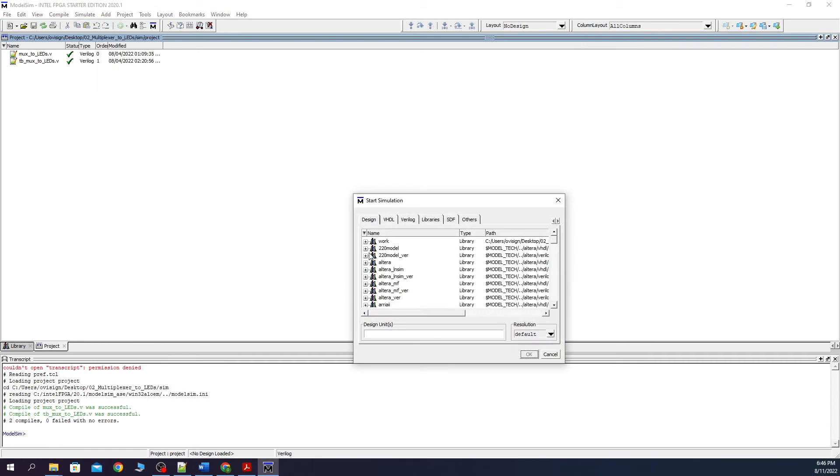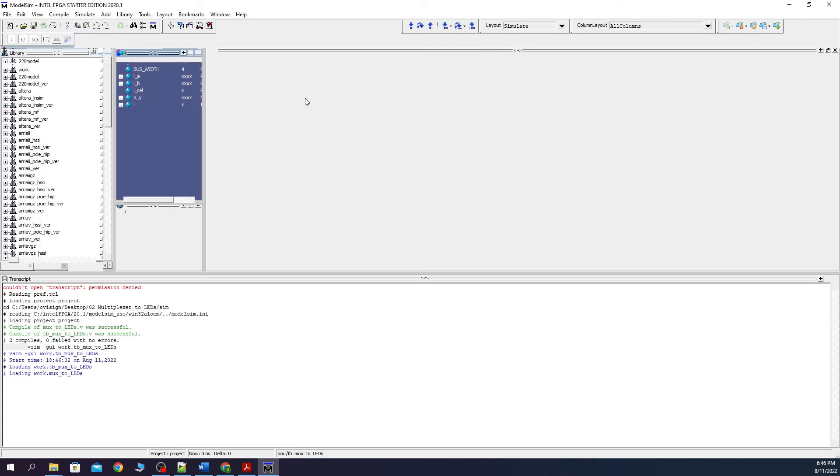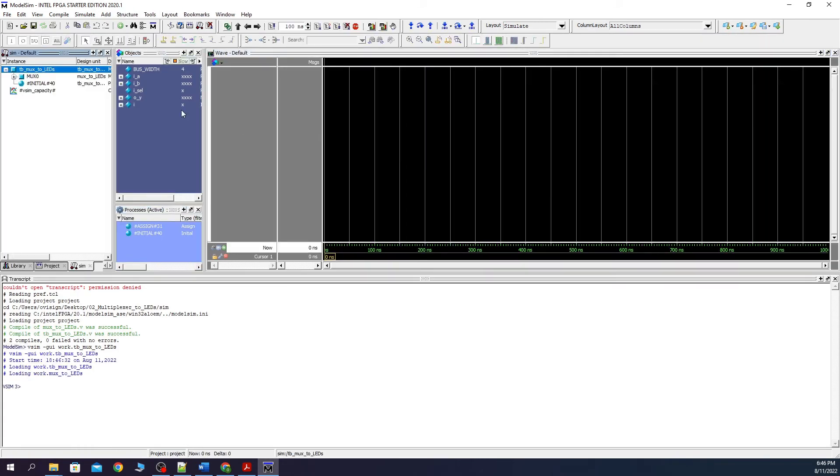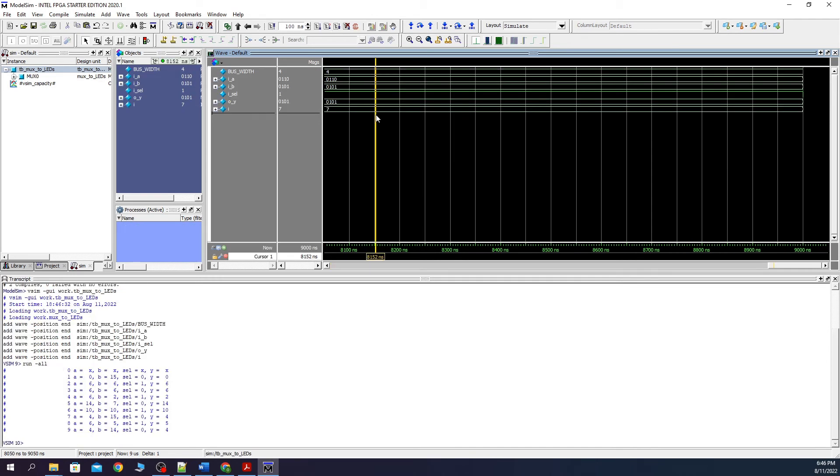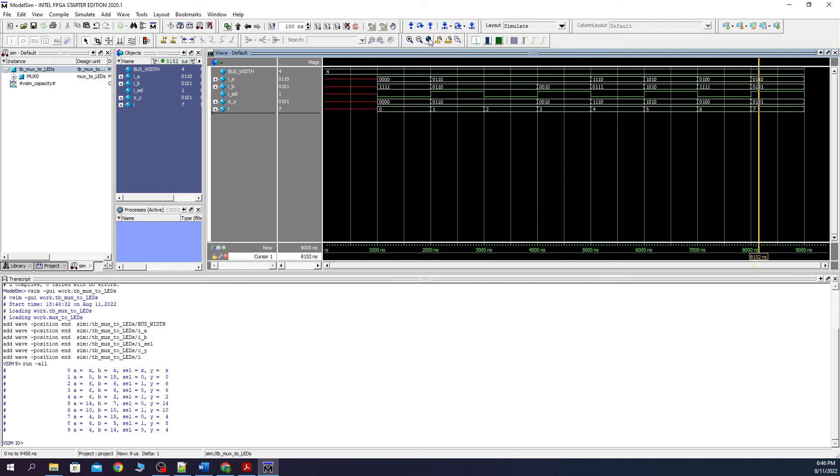And now we start the simulation. Let's add the signals to the waveform. And now press run all. Click on the waveform and then press on zoom full.